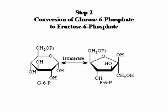The second step in glycolysis is the conversion of glucose-6-phosphate to fructose-6-phosphate. The substrate is glucose-6-phosphate and the product is fructose-6-phosphate. These two molecules are isomers of each other — they have the same number of each atom, just arranged differently. So this reaction simply involves breaking some chemical bonds and rearranging the atoms. The enzyme that catalyzes this reaction is an isomerase.